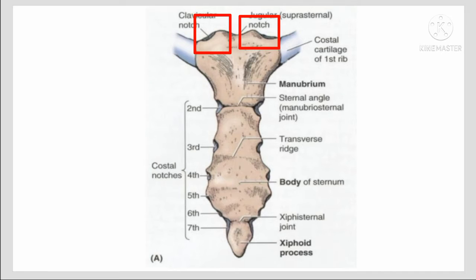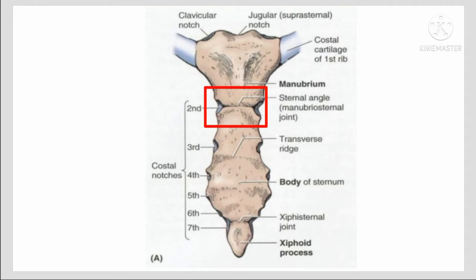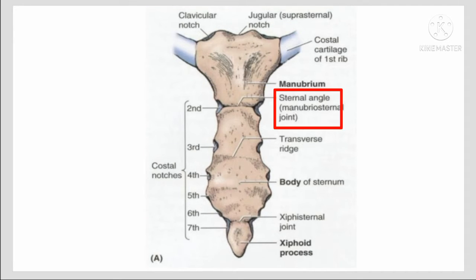These are the clavicular notches for the attachment of the clavicle. The first rib is attached to the manubrium. The second rib is attached at the sternal angle. The sternal angle is also called the manubriosternal joint, which is the joint between the manubrium and the body of the sternum.